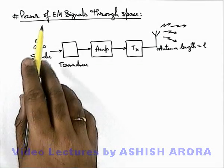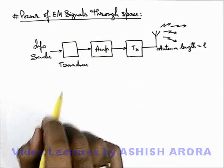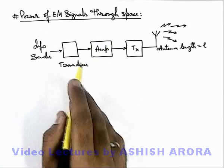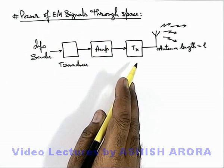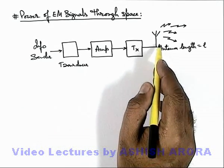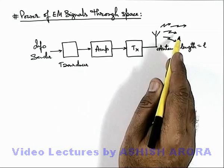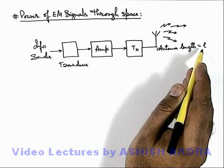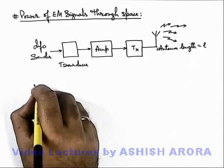Now we'll talk about the power of electromagnetic signals through space transmission. This is a typical transmission unit from an information center we've already discussed. Here, if the antenna used for space transmission or broadcasting of signals is of length l, then here we can write that: